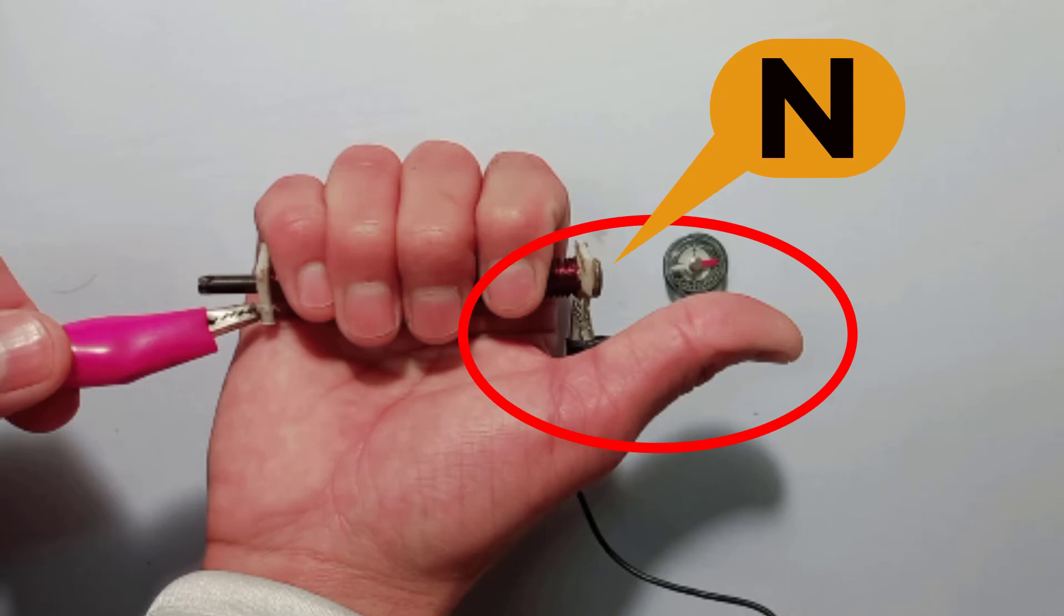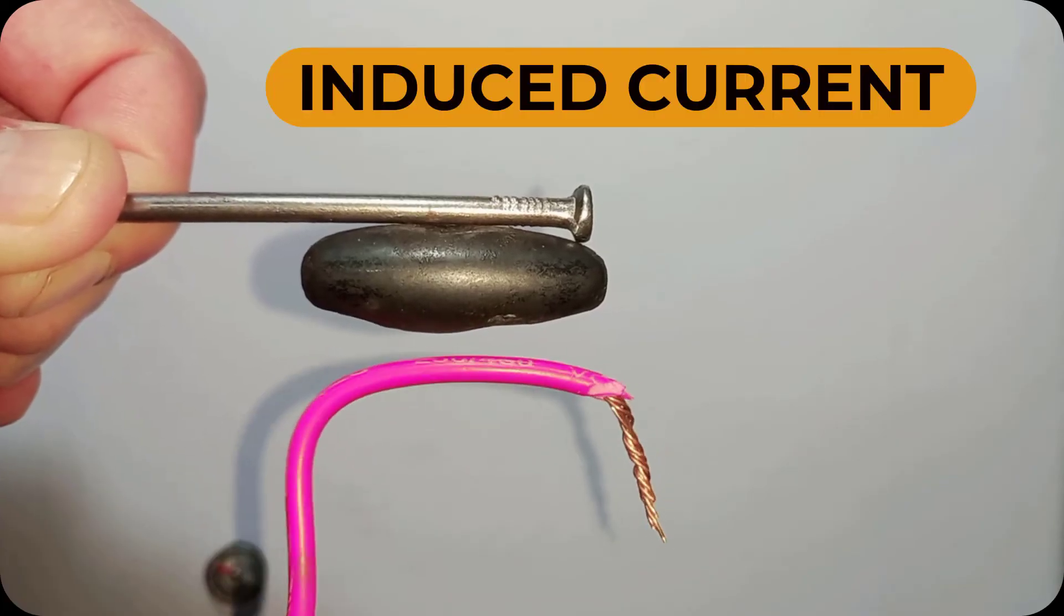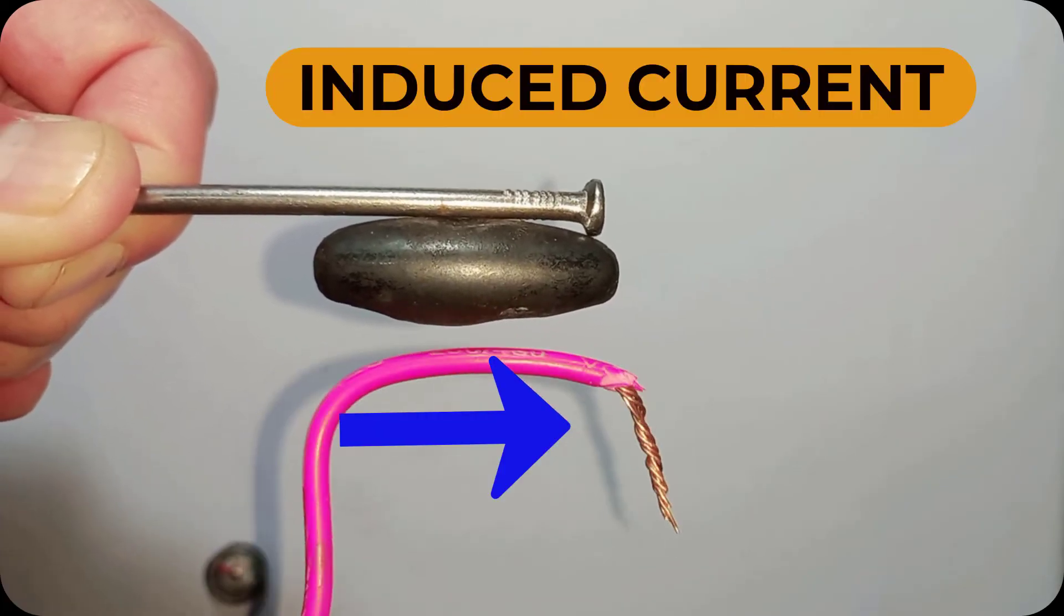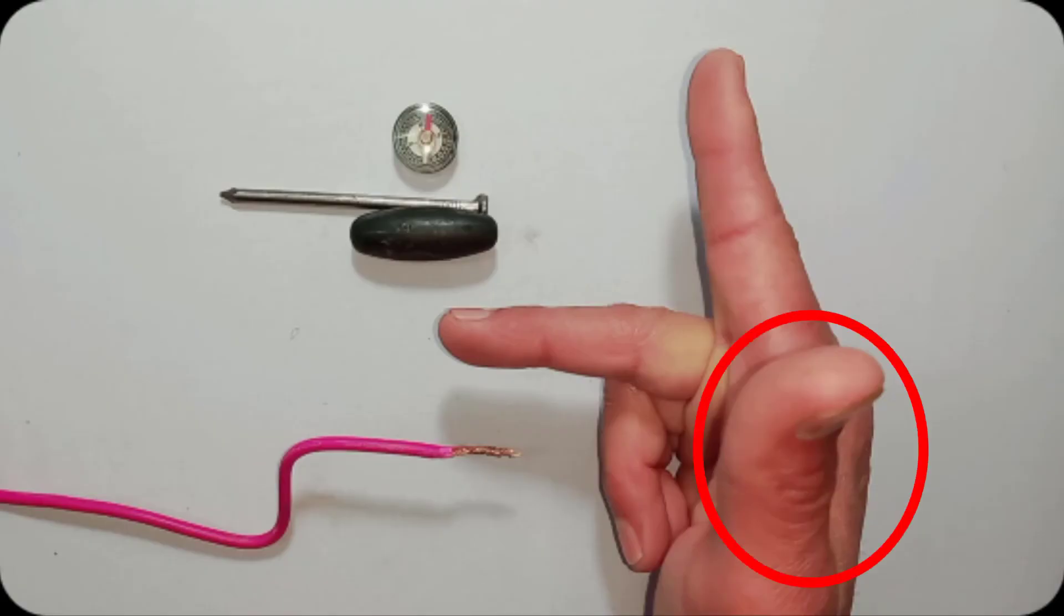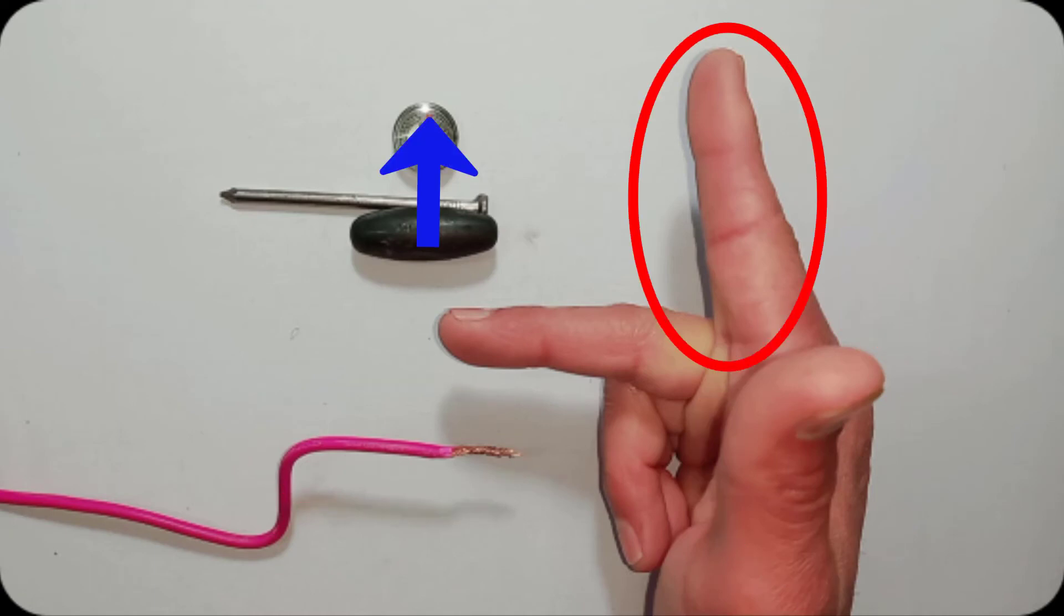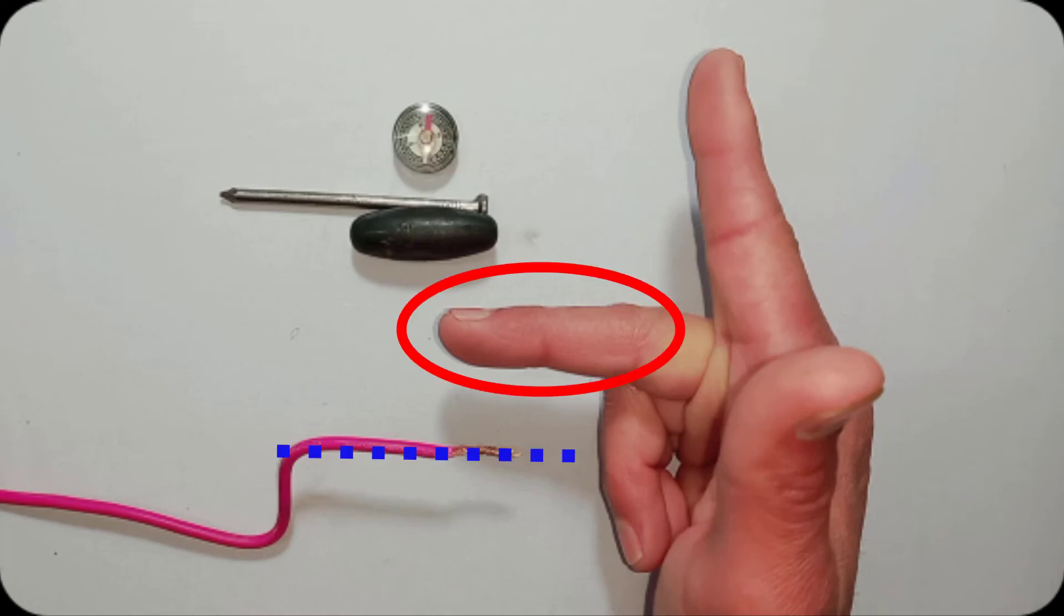To find the direction of induced current in a conductor moving in a magnetic field, point the thumb of the right hand in the direction of motion of the conductor. Point the forefinger in the direction of the magnetic field. The middle finger will indicate the direction of the induced current. Hope you enjoyed the video.